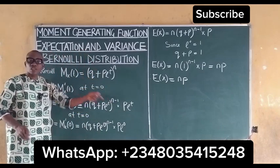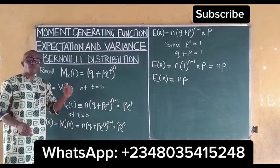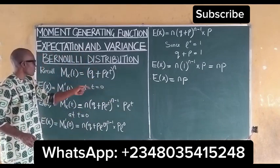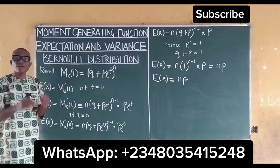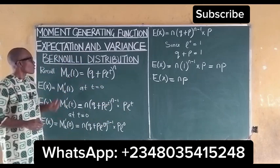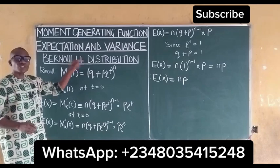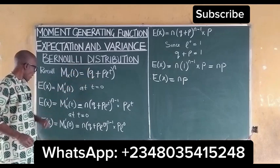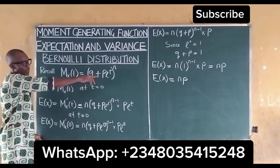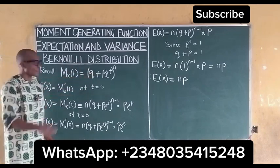Therefore our expected value of x is equal to np. This is how we can easily get the expectation of x, or the first derivative of the moment generating function for the Bernoulli distribution. So we have our expected value of x to be np.